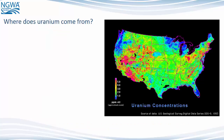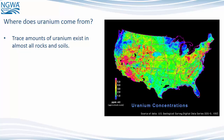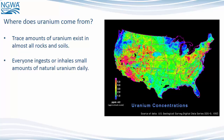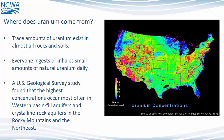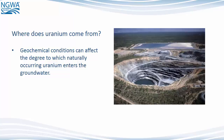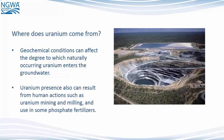Where does uranium come from? Trace amounts of uranium exist in almost all rocks and soils, and everyone ingests or inhales small amounts of natural uranium daily. A U.S. Geological Survey study found that the highest concentrations occur most often in western basin fill aquifers and crystalline rock aquifers in the Rocky Mountains and the Northeast. Geochemical conditions can affect the degree to which naturally occurring uranium enters the groundwater. Uranium presence can also result from human actions such as uranium mining and milling and use in some phosphate fertilizers.